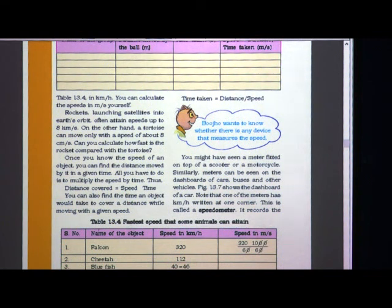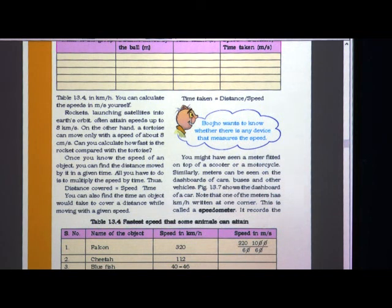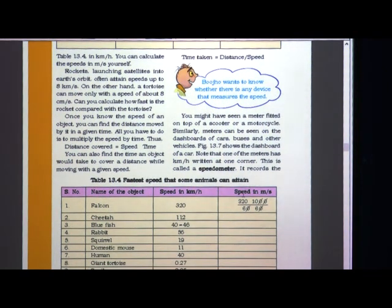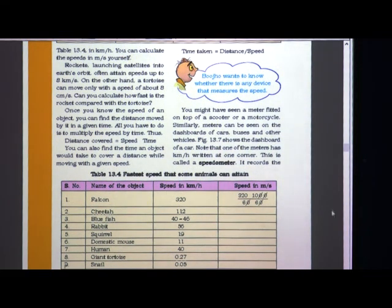Table 13.4 shows the fastest speed that some animals can attain. Time taken equals distance divided by speed. In this table you can see animals such as cheetah, falcon, bluefish, rabbit, squirrel, domestic mouse, human, giant tortoise, and snail. The speed of these animals is given in kilometers per hour, and you can do the conversion to meter per second.